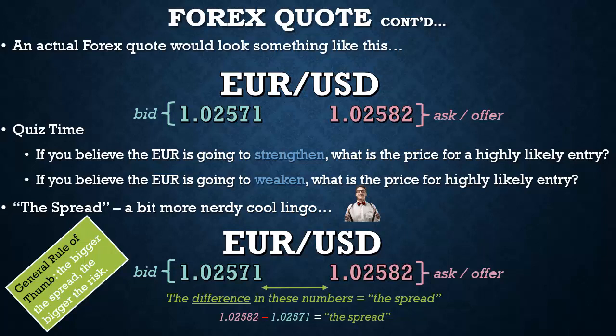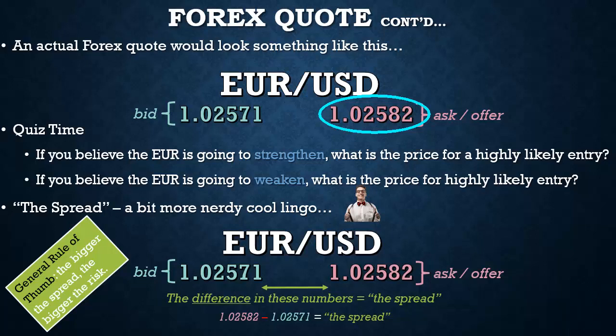Welcome back. Let's break it down. You think the Euro is going to strengthen, meaning the exchange rate value is going to increase. So you want to buy. To get a highly likely entry to go long, you need to find where the sellers are. The sellers are sitting right there at 1.02582. So the ask at 1.02582 is your highly likely entry for a long position.